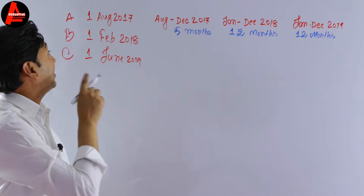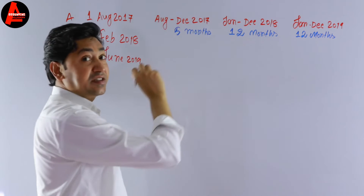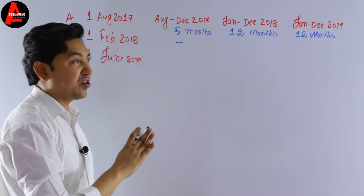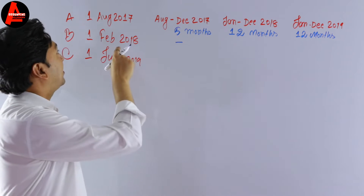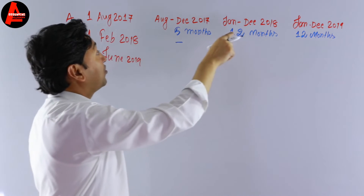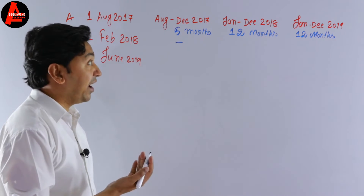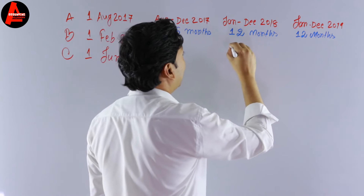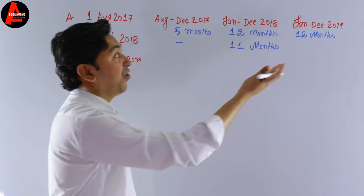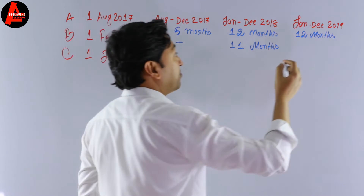Vehicle B is purchased on 1st February 2018, so it was not available in 2017. In 2018, it is used from February to December — that is 11 months. For 2019, it is used for the full year — 12 months. So Vehicle B is used for 11 + 12 = 23 months in total.